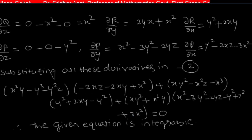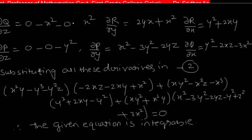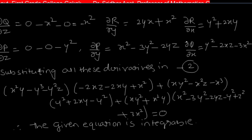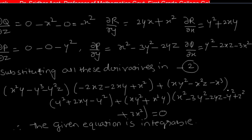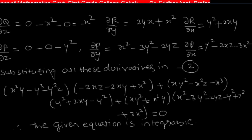Substituting all these derivatives into the integrability condition equation 2: ∂Q/∂z = -x², ∂R/∂y = 2xy + x², ∂R/∂x = y² + 2xy, ∂P/∂z = -y², ∂P/∂y = x² - 3y² - 2yz, ∂Q/∂x = y² - 2xz - 3x². Multiplying term by term, all terms cancel and the result equals 0. Therefore the given equation is integrable.